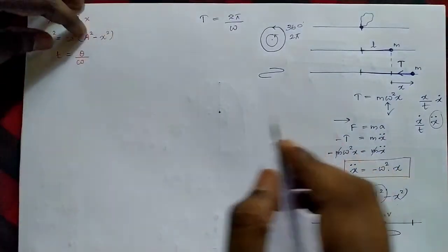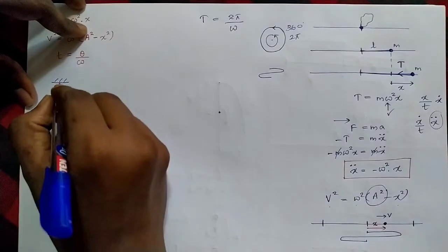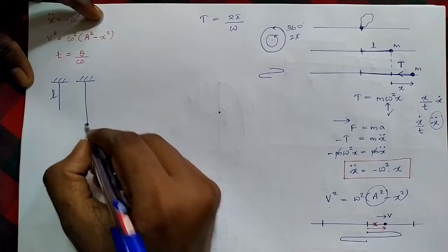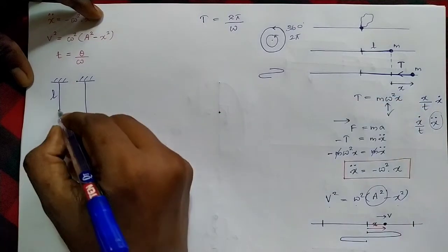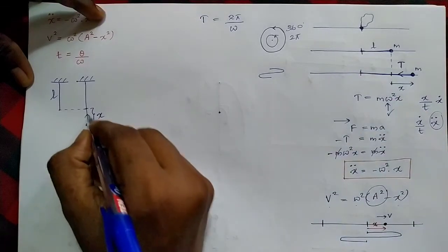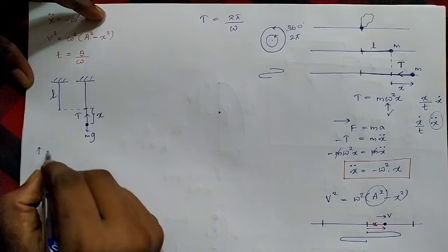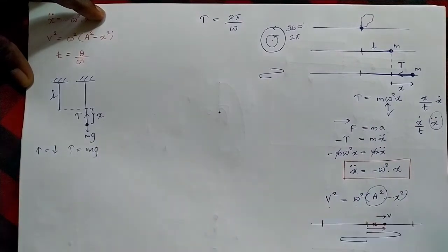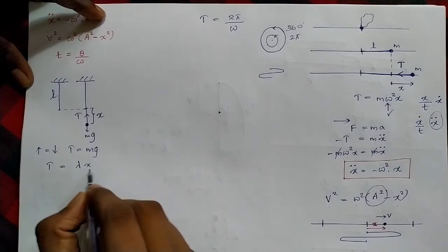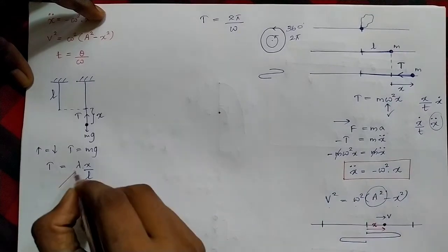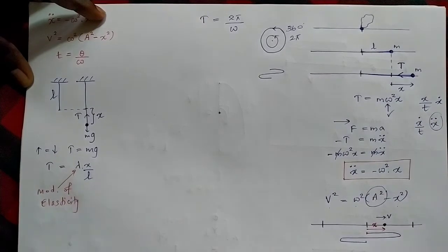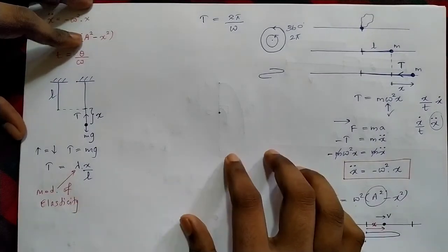Let's say we have a vertical elastic string of natural length L. When a mass is attached to its end, it will definitely extend. At equilibrium, the tension equals the weight. Also, this tension is equivalent to λ times the extension over natural length: T = λx/L. Here λ is the modulus of elasticity, which is a constant given in the question.